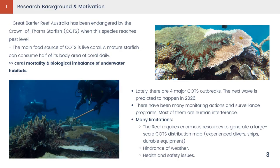As we all know, the Great Barrier Reef in Australia is among the world heritage. It consists of over 300 individual reef systems and coral caves, which provide the underwater structures and ecosystem services for many marine creatures. However, lately, it has been endangered by a species called crown-of-thorns starfish. Due to the main food source of this species being live coral, the outbreak of COTS has led to severe coral mortality and biological imbalance for the underwater habitats.